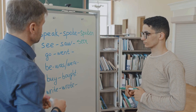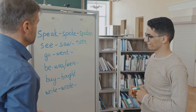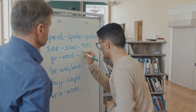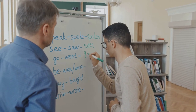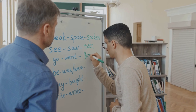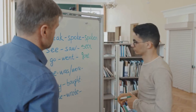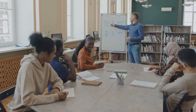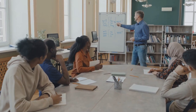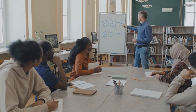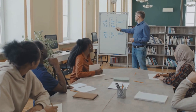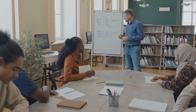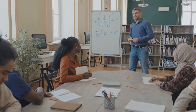Our focus today is on one such method: Greenberg's mass comparison method. Developed by the renowned linguist Joseph Greenberg, it is a controversial approach to language classification. It's based on the comparison of words and grammatical structures across a wide range of languages, with the aim of tracing their common roots and relationships.